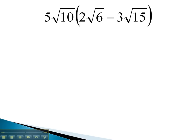Here, you notice we've got the 5√10 in front of the parentheses. We'll start by distributing it in, multiplying by the 2√6.